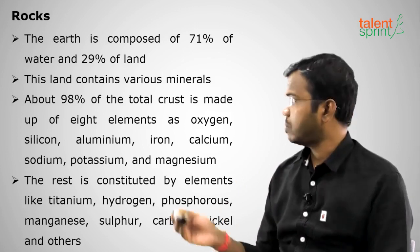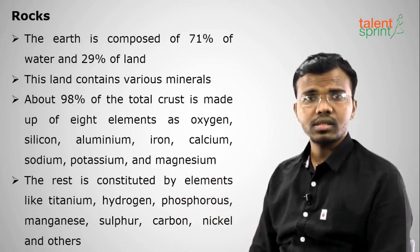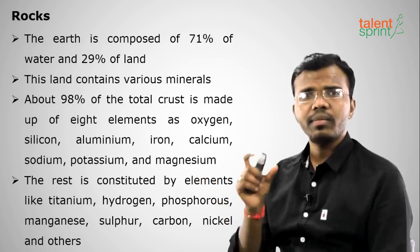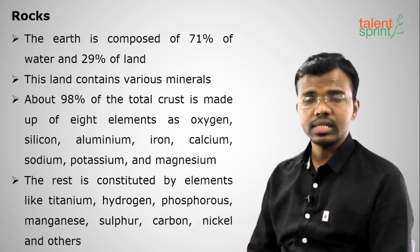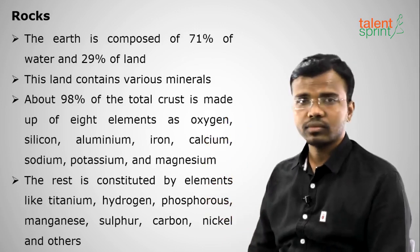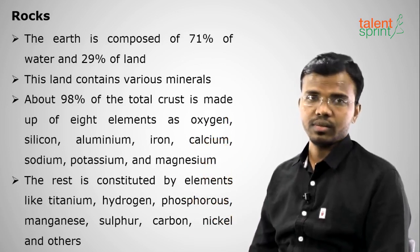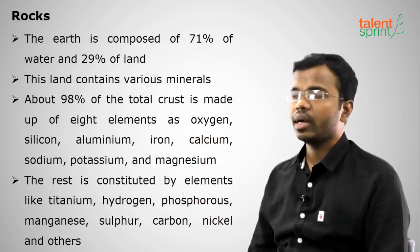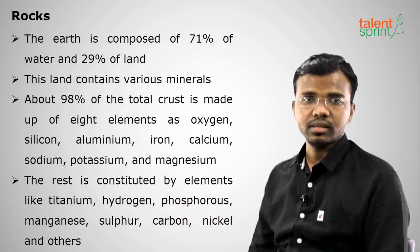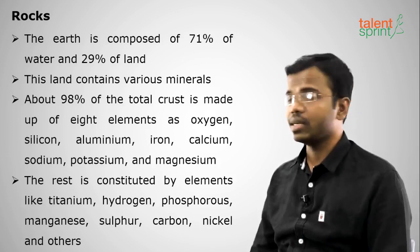The interior of the Earth contains mainly eight major elements: oxygen, silicon, aluminium, iron, calcium, sodium, potassium, and magnesium. These eight minerals make up 98 percent of the total Earth's crust. Other elements include titanium, hydrogen, phosphorus, manganese, sulfur, carbon, and nickel, but the eight listed are the major ones.